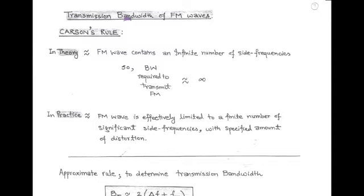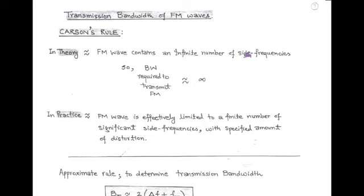Hello friends. Our next topic is transmission bandwidth of FM wave. The bandwidth of FM wave can be determined by using a rule called Carson's rule. Theoretically, as we have already discussed, FM wave contains an infinite number of side frequencies that are spaced symmetrically on either side of the carrier. So accordingly, the bandwidth required to transmit FM should also be infinite.